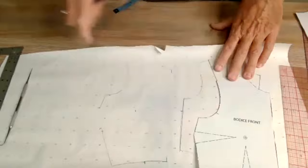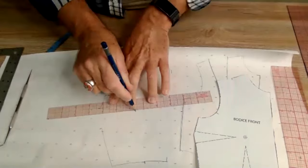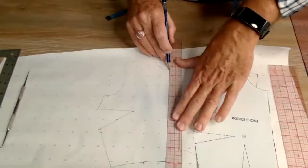Then all we have to do is take our ruler, connect that, and now we have a large side dart and no bottom dart.